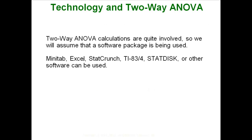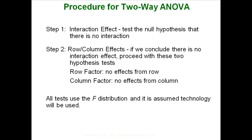Technology is the way to go with this — you don't even want to try doing these things by hand. The first thing you always want to do is test for an interaction, and the null hypothesis is that there is no interaction, so you are hoping to fail to reject. If we conclude there is no interaction effect, we can proceed to test whether there is a row effect or a column effect, using the F distribution.